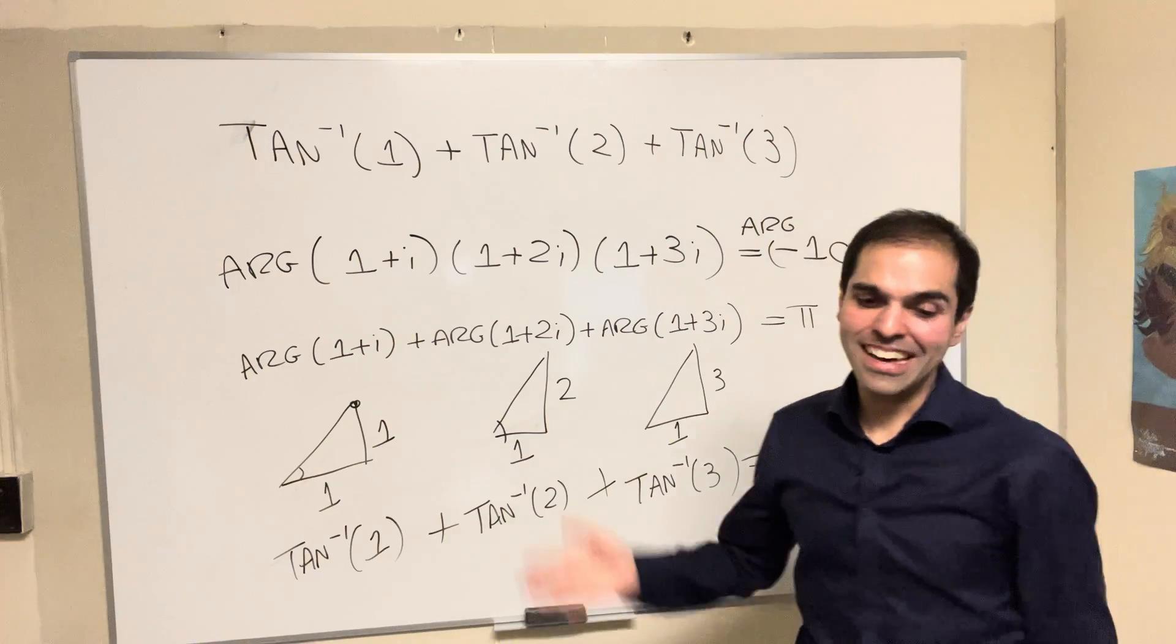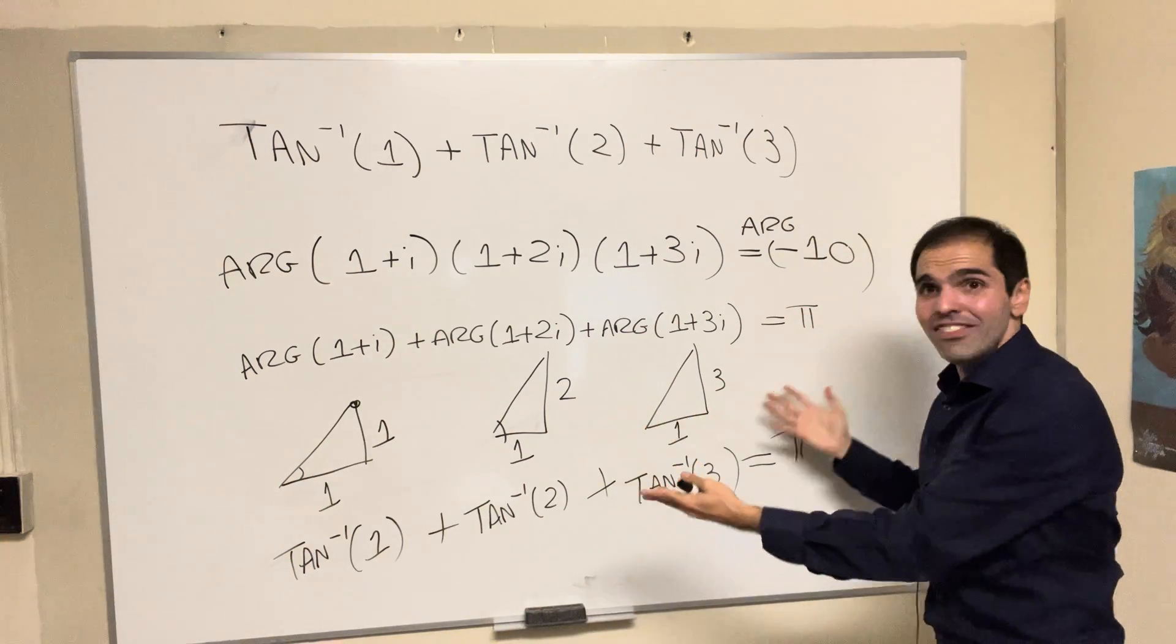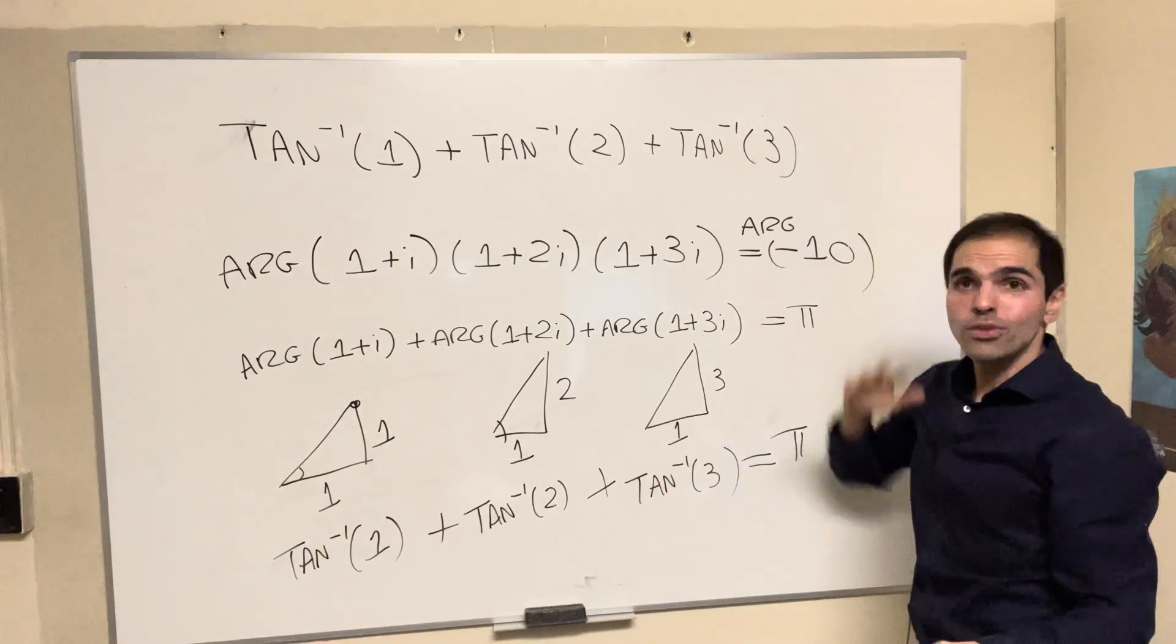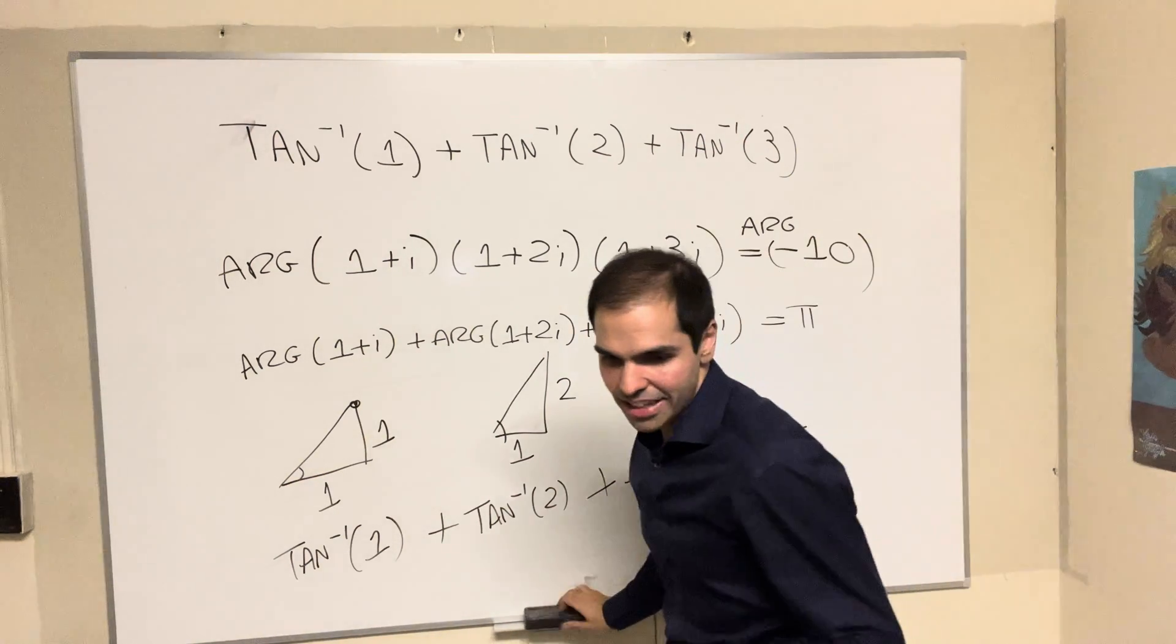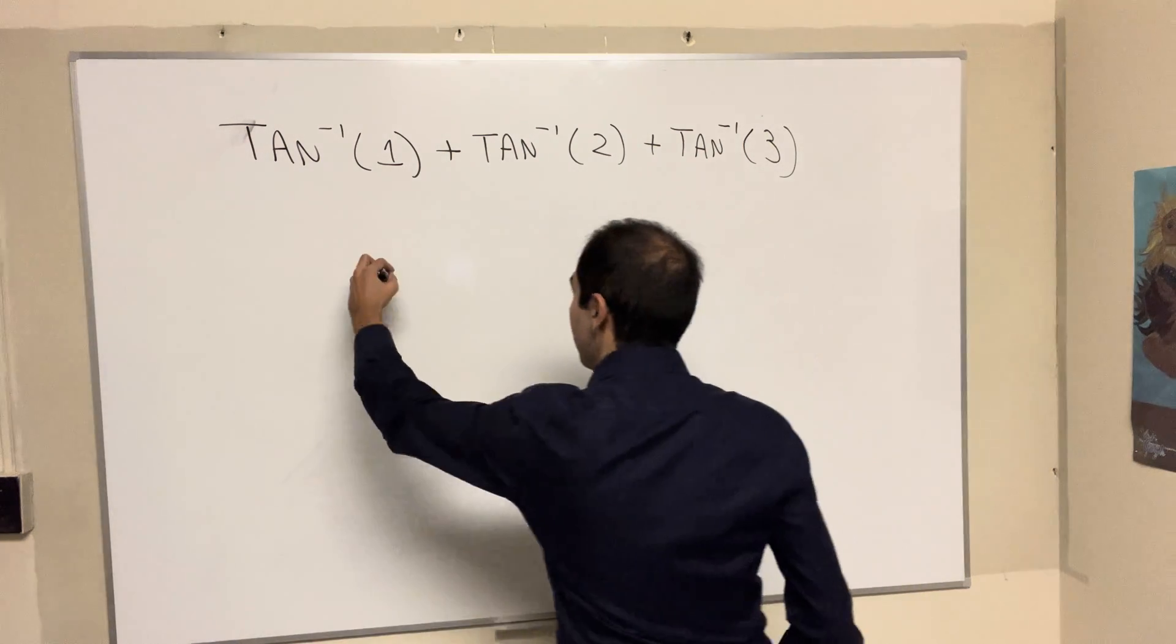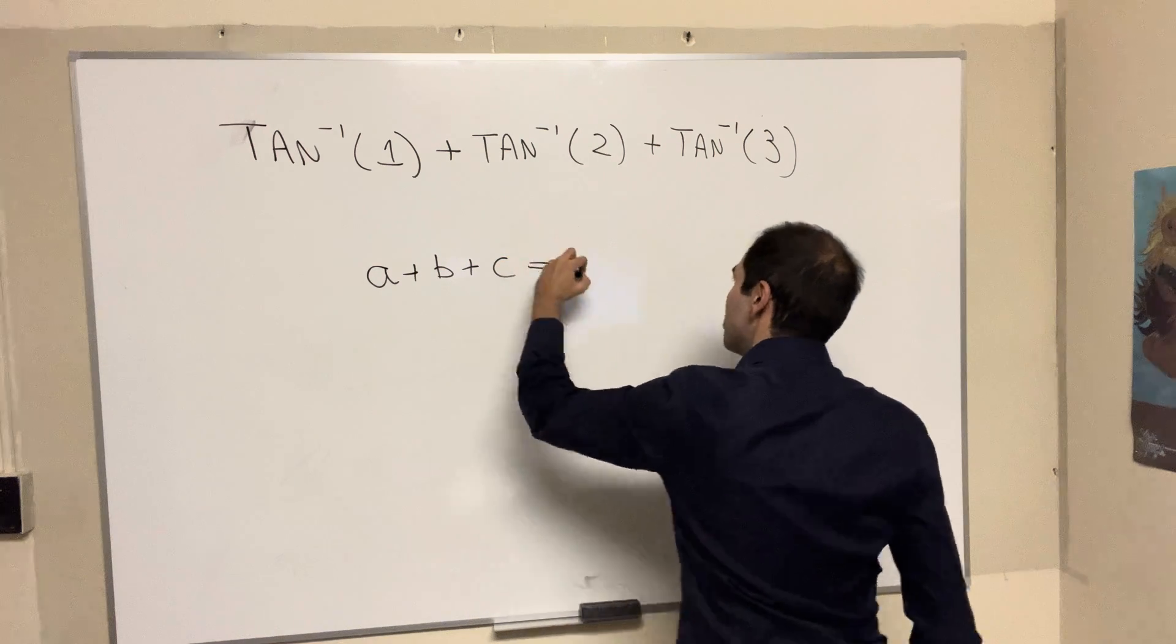Wow, how cool is that? And not only this, you can even generalize this. I mean, you can use the same proof to prove a more general result, which I just want to state here. Namely, if you happen to have that a+b+c equals abc,